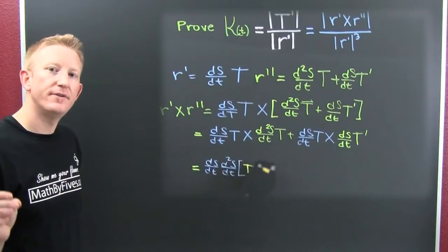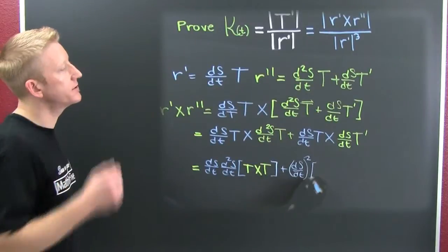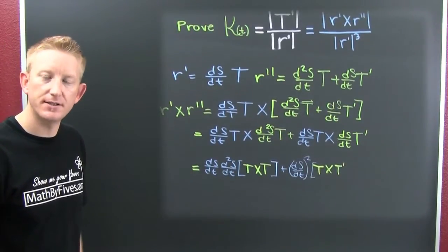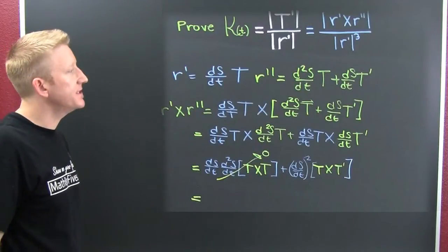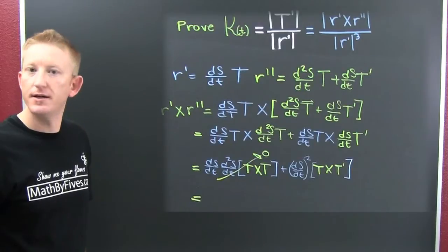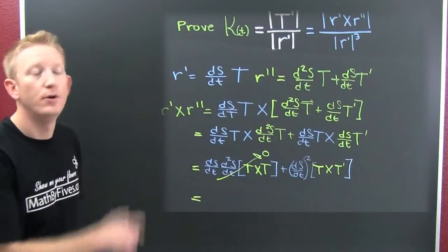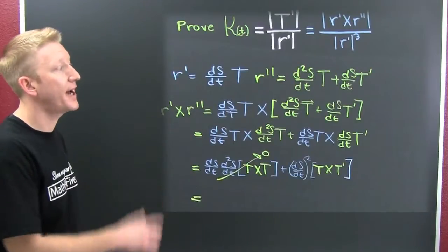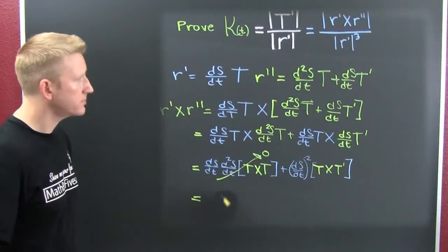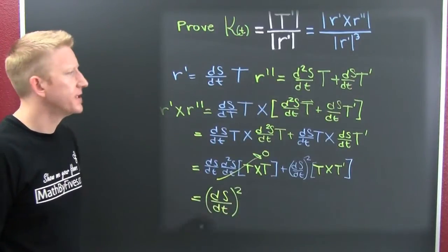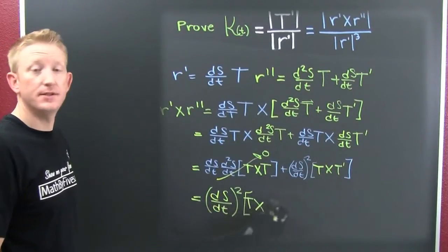Notice that these derivatives are scalar functions, so we can pass them out of the cross product — a property of the cross product. Then we see that T cross T is the zero vector, because they are parallel. What we're left with is ds/dt times ds/dt, which is (ds/dt) squared, times T cross T prime. So r prime cross r double prime equals (ds/dt)² times T cross T prime.